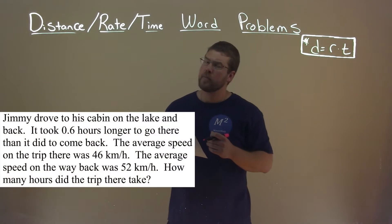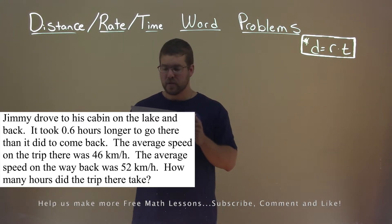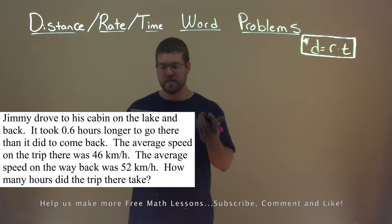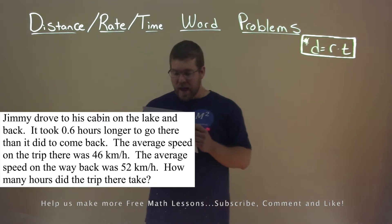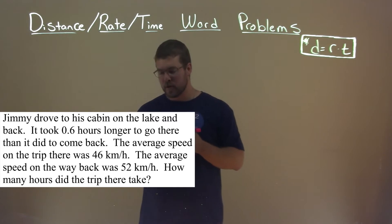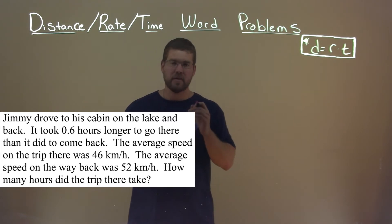We're given this problem right here. Jimmy drove to his cabin on the lake and back. It took 0.6 hours longer to go there than it did to come back. The average speed on the trip there was 46 kilometers per hour. The average speed on the way back was 52 kilometers per hour. How many hours did the trip there take?